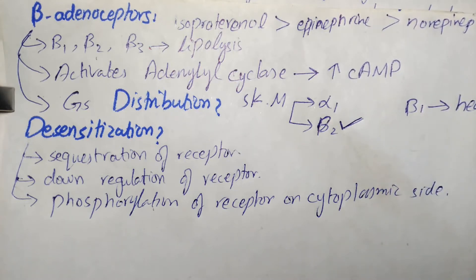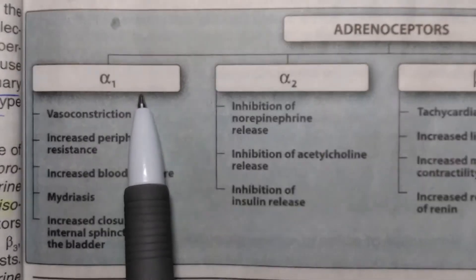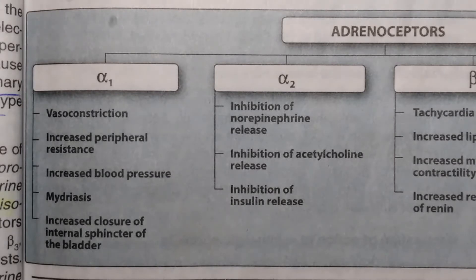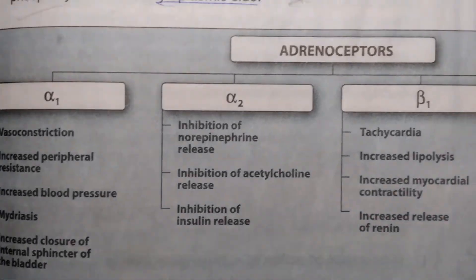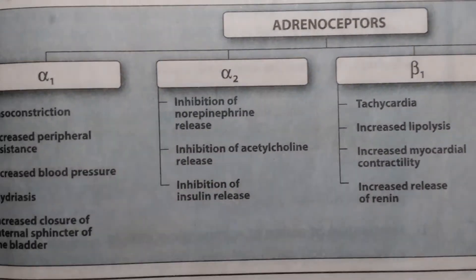Regarding characteristic responses mediated by adrenoceptors: activation of alpha 1 receptors causes vasoconstriction in the vessels. Alpha 1 receptors are present in the vessel walls and their activation causes vasoconstriction, whereas beta 2 receptors cause the opposite effect — vasodilation.